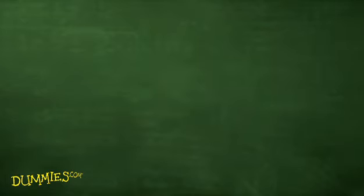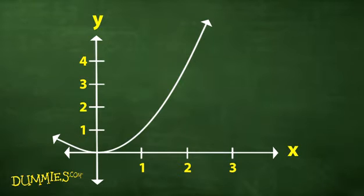Think about the Earth. It's round, but it looks flat to us. Calculus works because once curves are straight, you can use regular algebra and geometry. You zoom in by way of limits. The mathematics of limits is the microscope that zooms in on a curve.